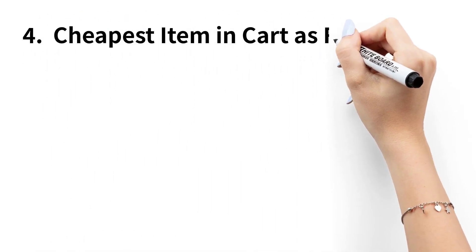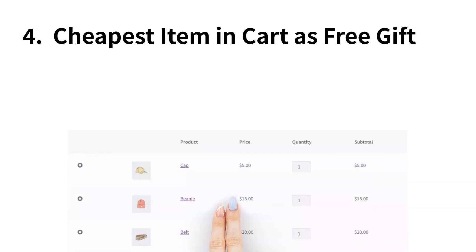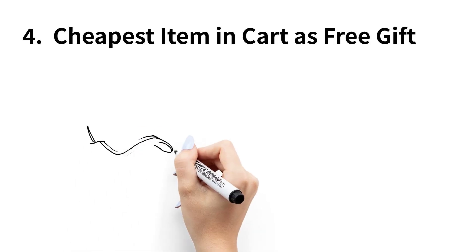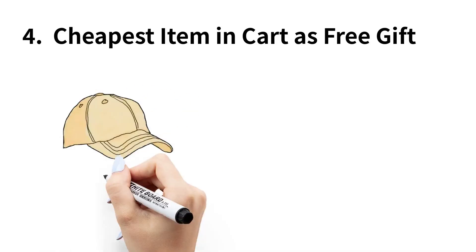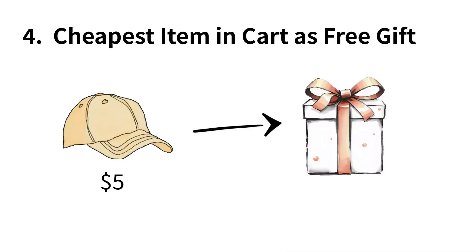The fourth way is cheapest item in cart as free gift. For example, if a user has added three products to their cart priced at $5, $15, and $20, the user is eligible for the $5 product as a free gift because it is the cheapest item in their cart.